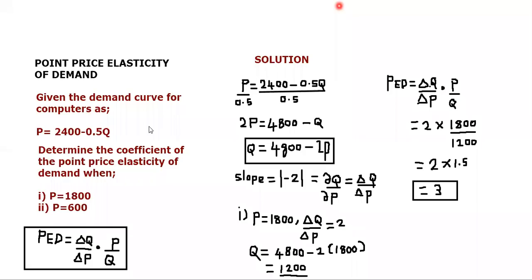In today's lesson we're going to look at the point price elasticity of demand. The point price elasticity of demand is simply the percentage change in quantity demanded per unit percentage change in price. We are trying to measure the price elasticity of demand at a given point on the demand curve. It's different from the arc elasticity of demand where you use the midpoint formula — here we're measuring demand at a point, not between two points.